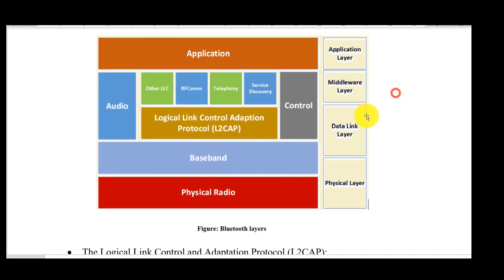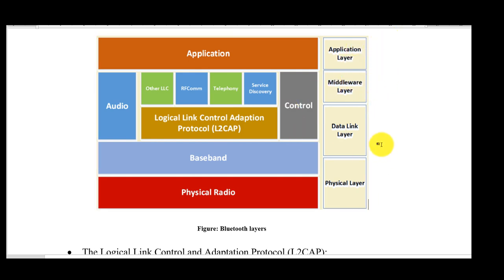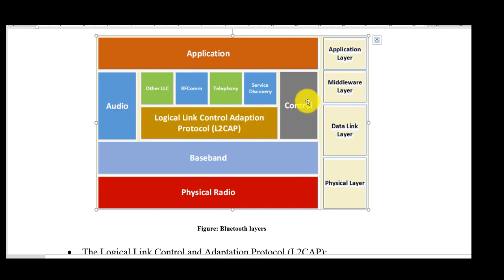The Bluetooth protocol stack is similar to the OSI 7-layer model but not exactly the same. At the bottom is the physical layer, then the data link layer, a middle layer, and an application layer — with several layers merged together. In the data link layer, we have L2CAP — Logical Link Control Adaptation Protocol — along with supportive control protocols, RF communication protocols, and service query protocols.